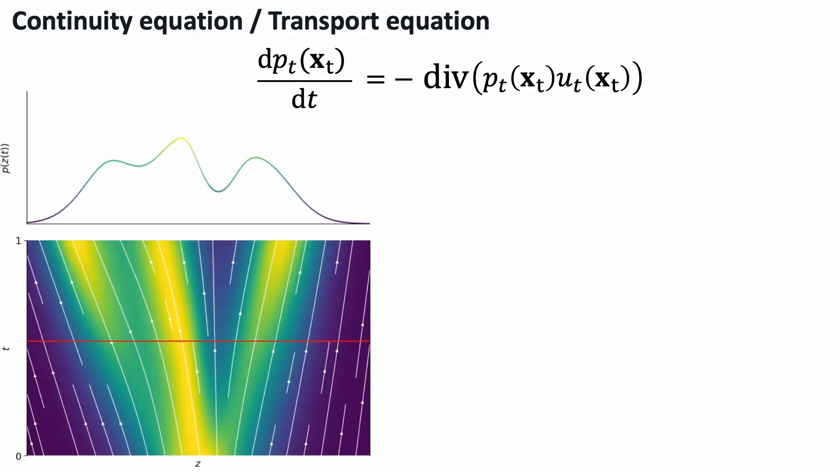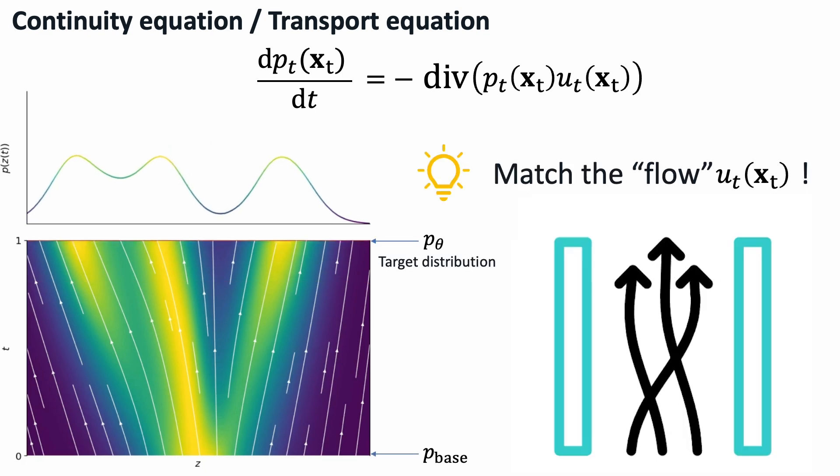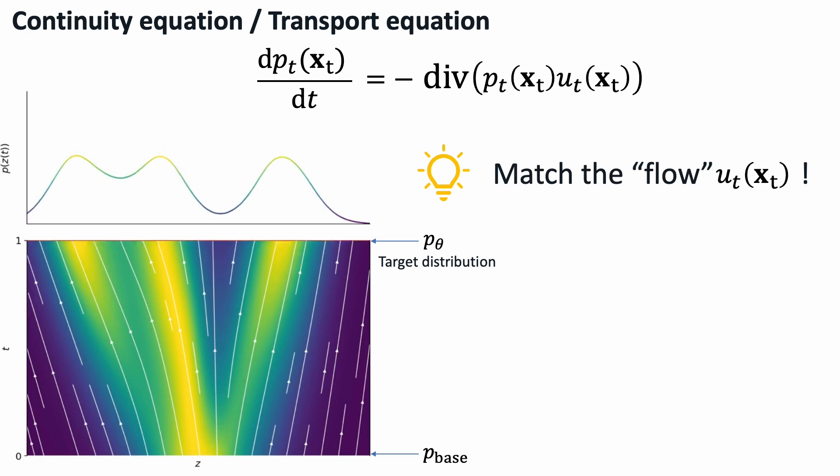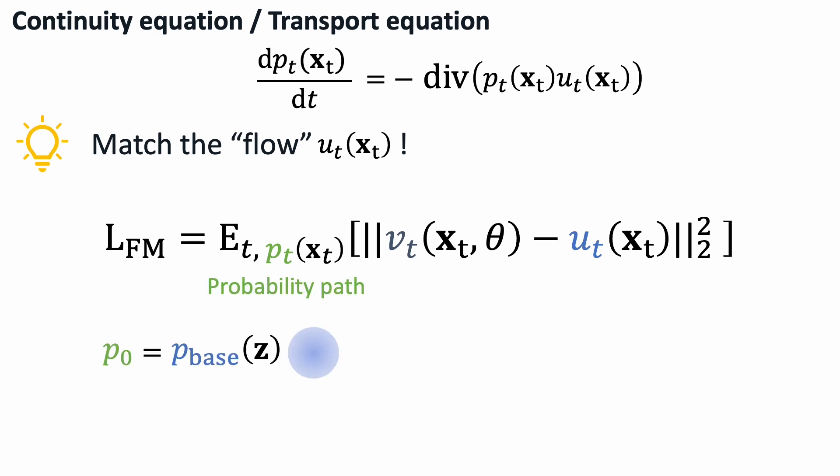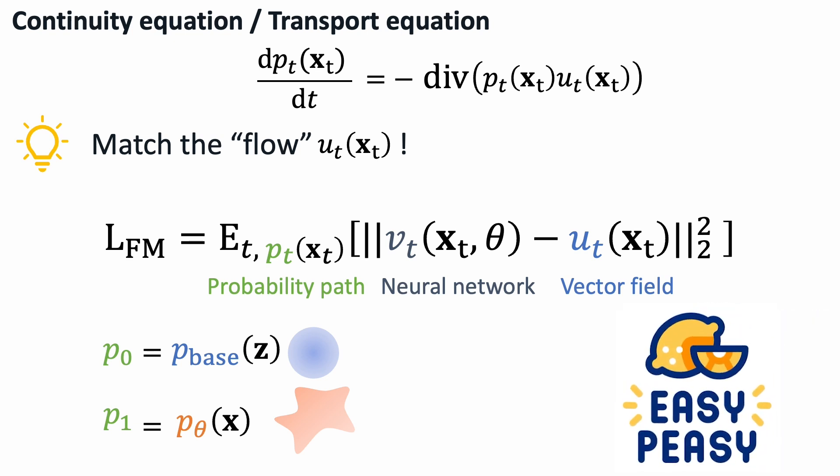Let's look at the continuity equation again. Instead of focusing on learning the right probability density, that is computationally expensive, we can instead just learn to match your flow. The time varying vector field ut fully determines the probability path and the final target distribution. This insight leads to the flow matching objective. The goal is to train a neural network to match the vector field. Here, the probability path interpolates from the base distribution at time 0 to the target distribution at time 1. This looks great! The training objective is just a simple L2 regression loss. It's simple to implement and does not involve integrating the vector field during training.